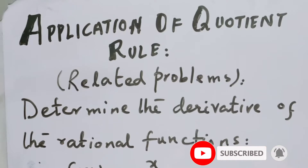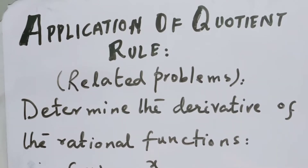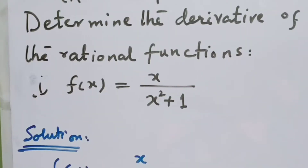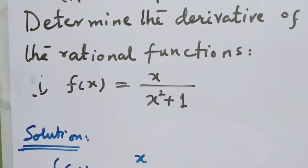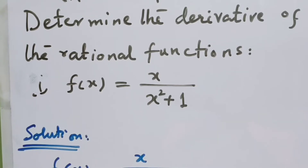We apply the quotient rule to evaluate the derivative of rational functions. Here we have an example: we have to determine the derivative of f(x) = x divided by (x² + 1). This is a rational function, so we will apply the quotient rule to evaluate the derivative of f(x).